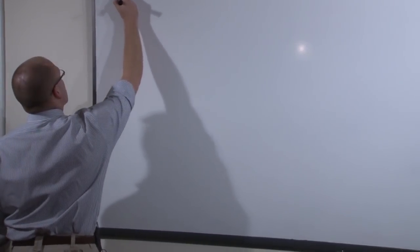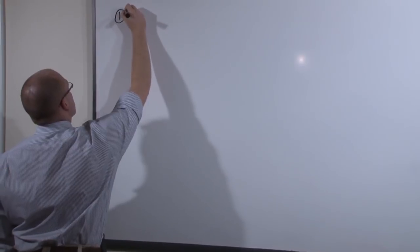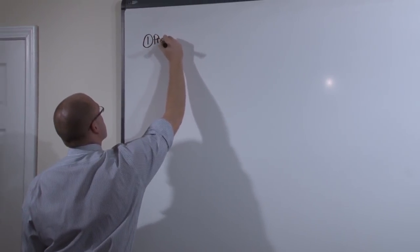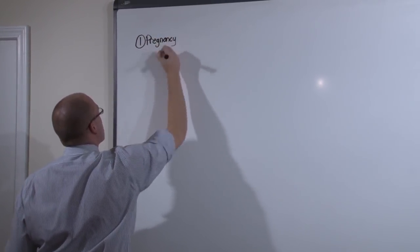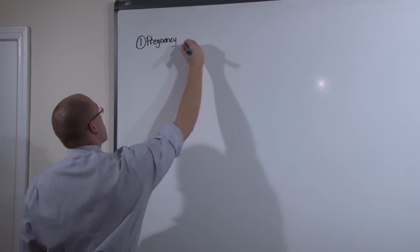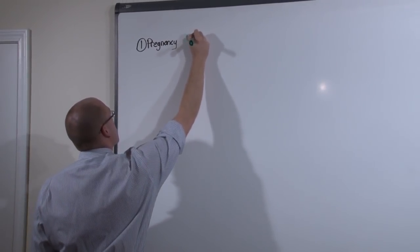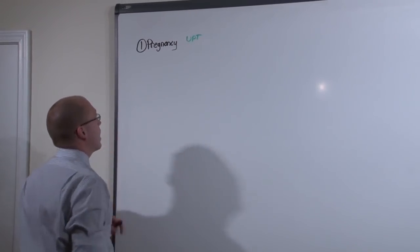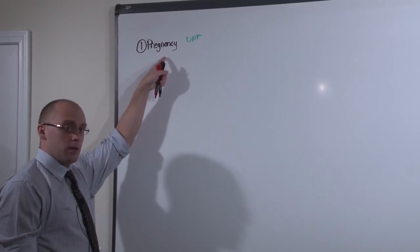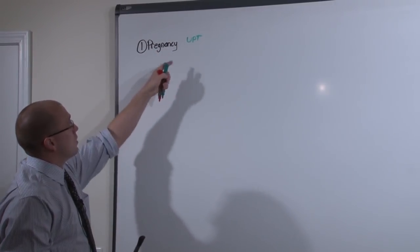By far the most common cause of missed periods or secondary amenorrhea is pregnancy. This is a simple test to check for, get a urine pregnancy test, and then there's an entire section labeled OB for this medical condition.